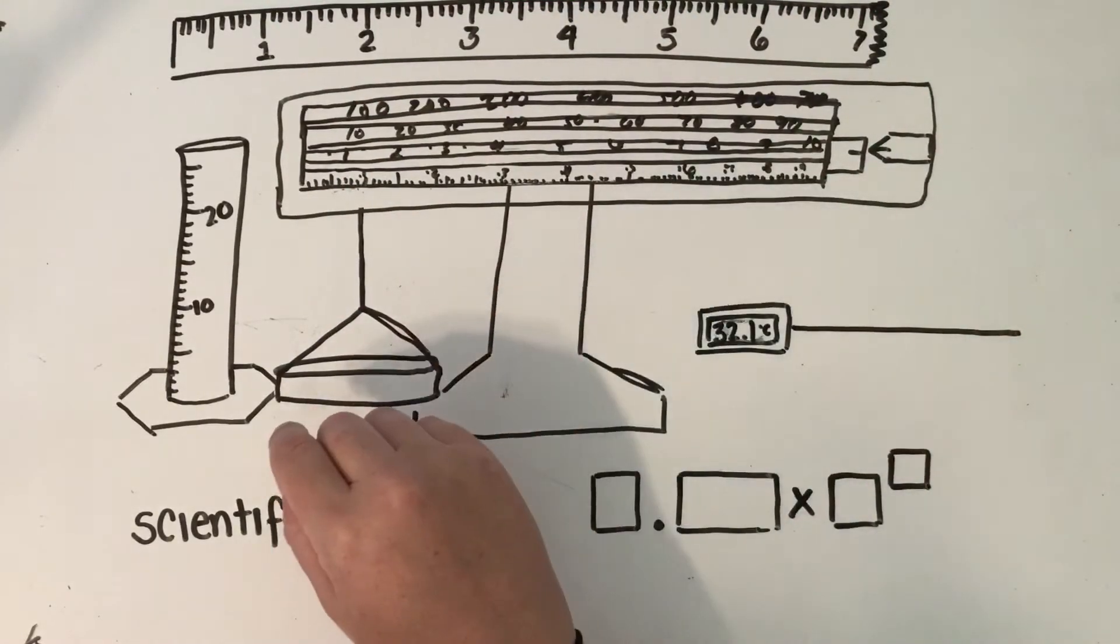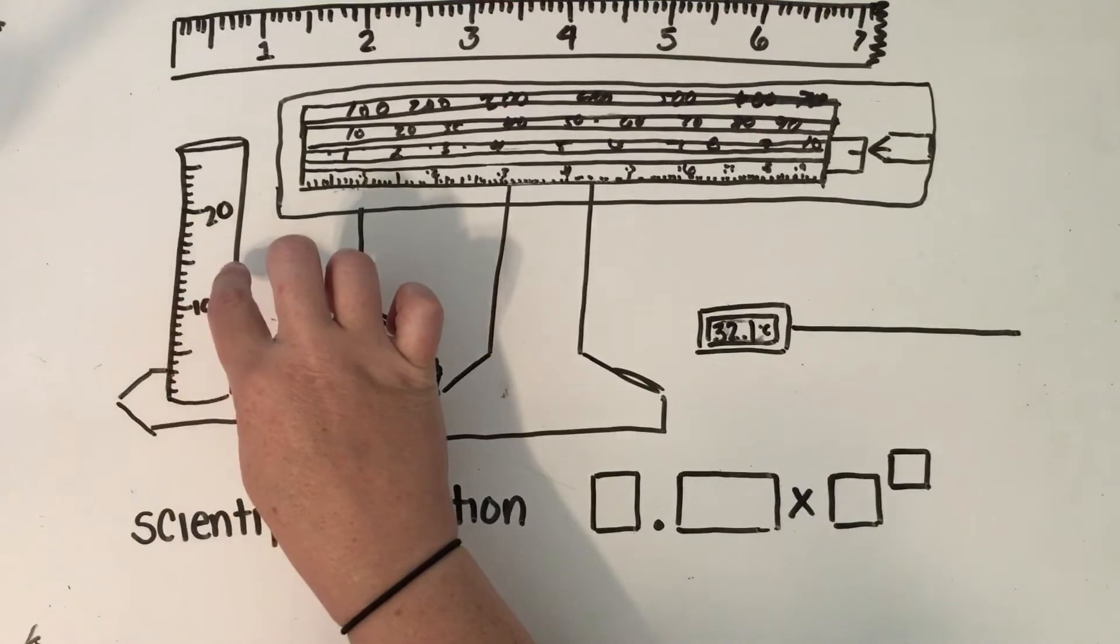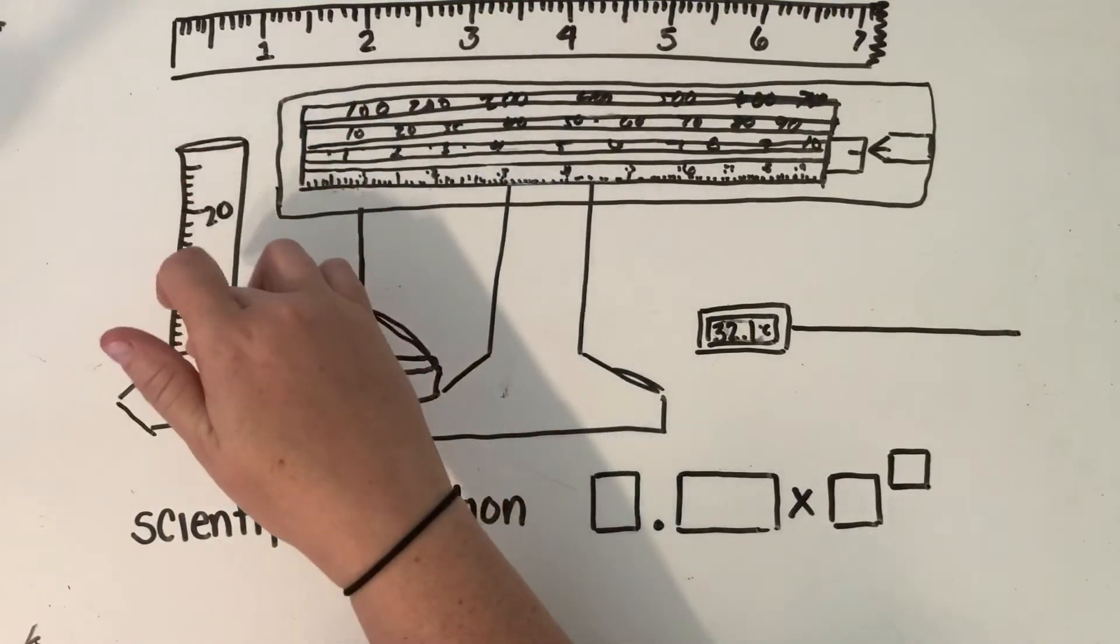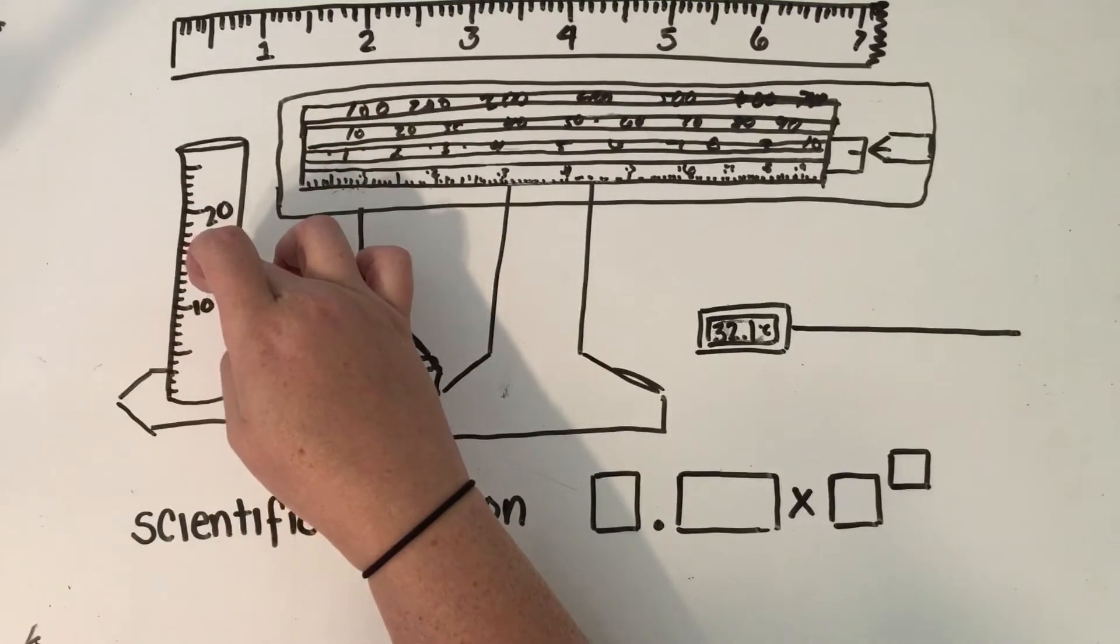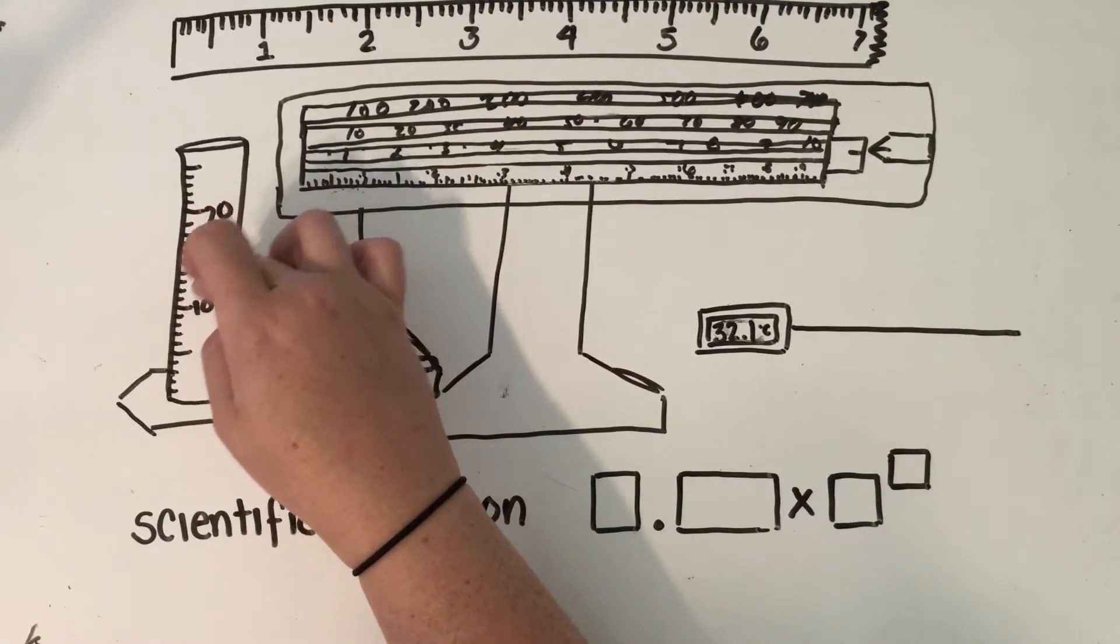Or we might even be using water displacement, which is a method I think you used in middle school where you fill a graduated cylinder to a certain amount of water and then drop an irregularly shaped solid in which would make the level of the water rise corresponding to the amount of volume of the solid that you dropped in.